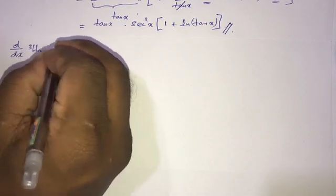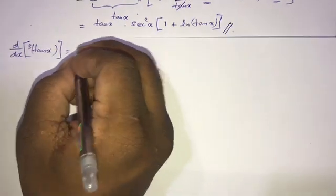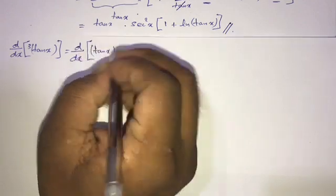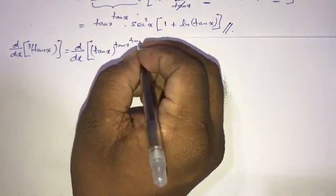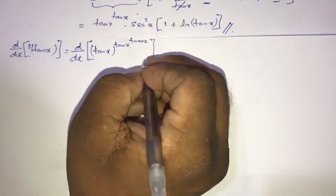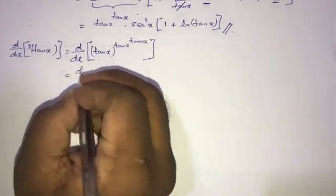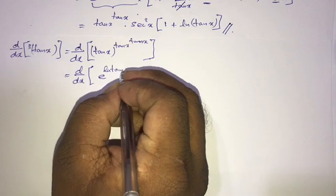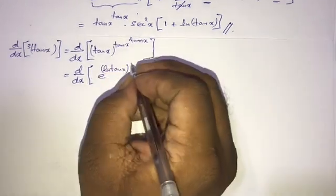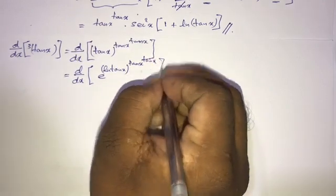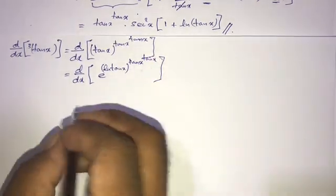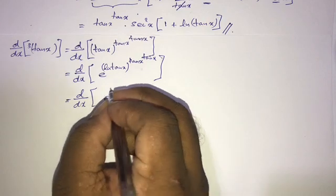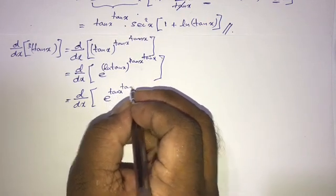Now let's look at the second question: the derivative of the hyper power of tan x, which is tan x raised to tan x raised to tan x, and so on. We again apply the identity and write d/dx of e to the ln of tan x, raised to the tan x to the tan x power.